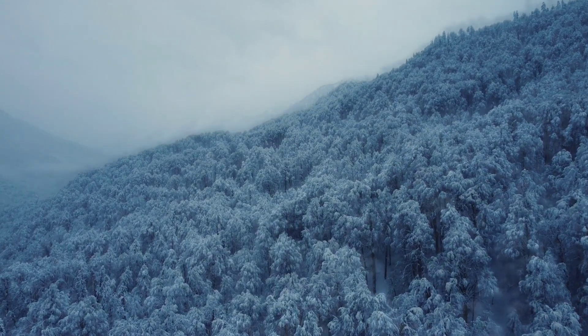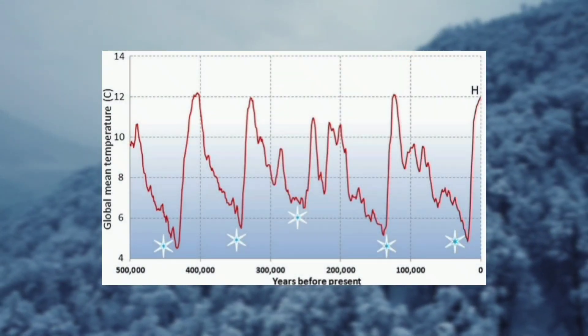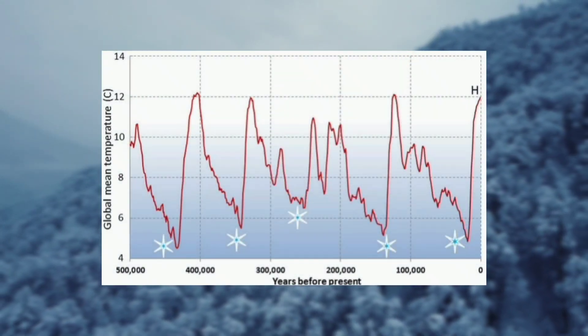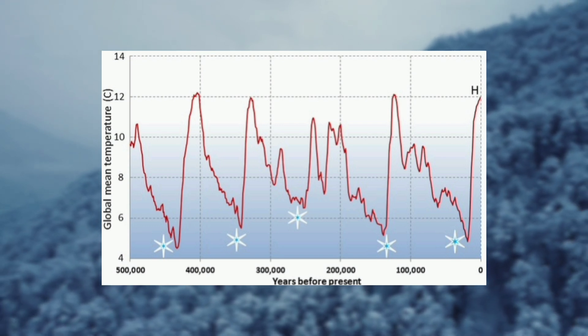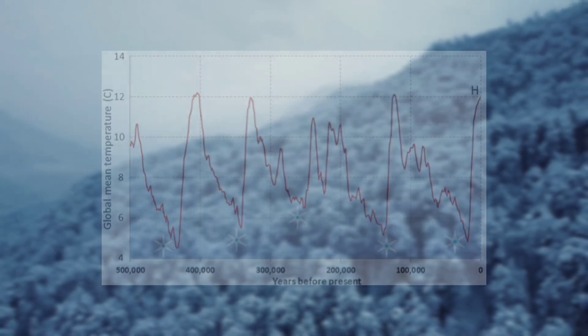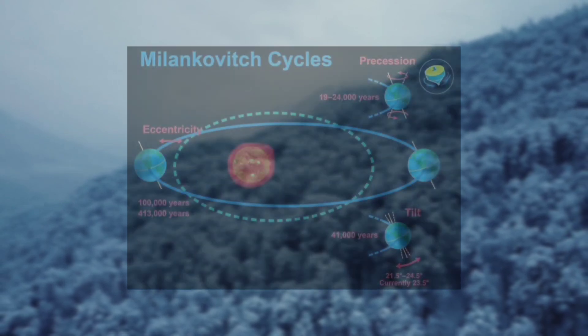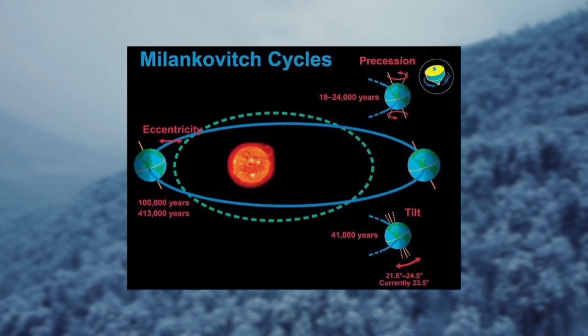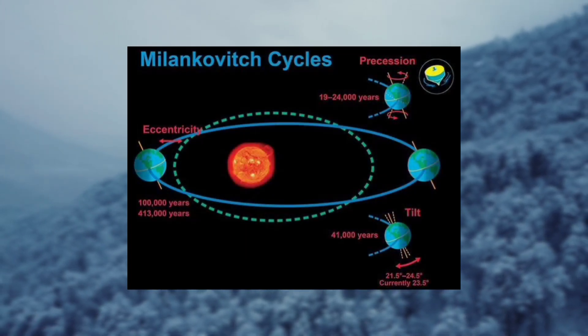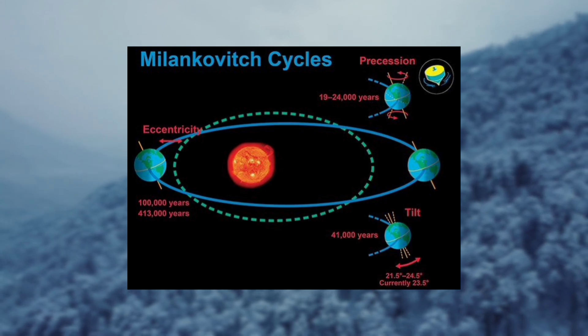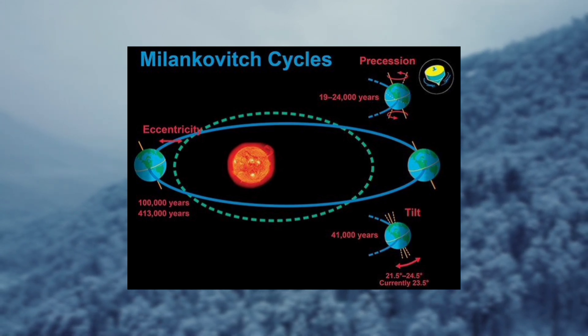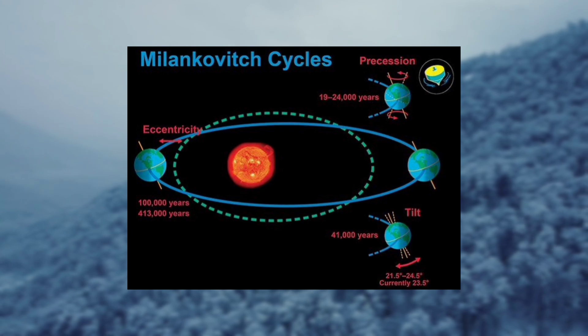The Pleistocene Epoch was characterized by repeated glacial cycles, during which large ice sheets expanded and contracted across vast regions of the northern hemisphere. These glaciations were driven by complex interactions between the Earth's orbit, axial tilt, and precession, known collectively as Milankovitch cycles. These cycles affect the distribution and intensity of solar radiation reaching the Earth, leading to periodic changes in climate.